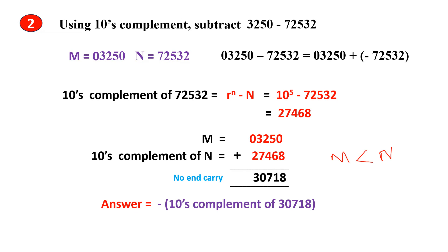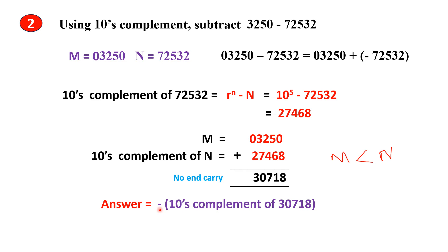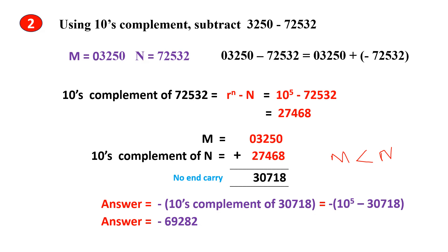We have to place a negative sign in front of that. So the next step is to find the 10's complement of this number to get the answer in a form we can understand, and place a negative sign in front of it. When we solve and find the 10's complement, we get the final answer.